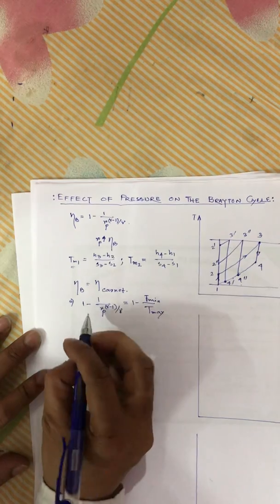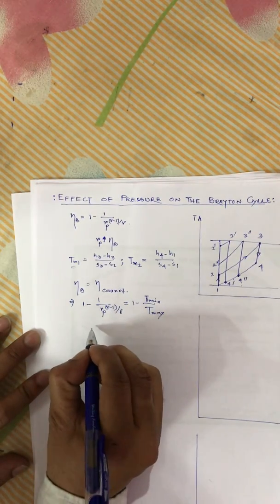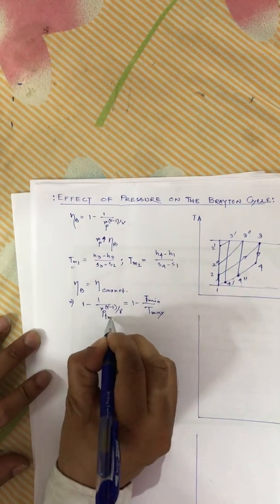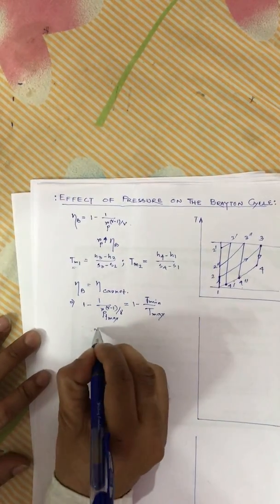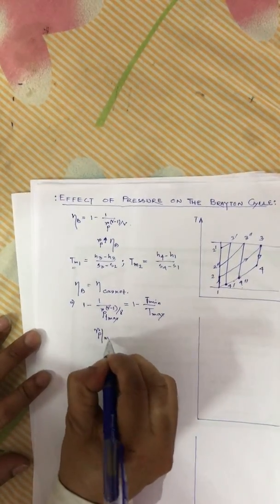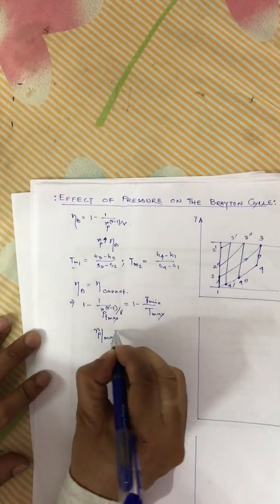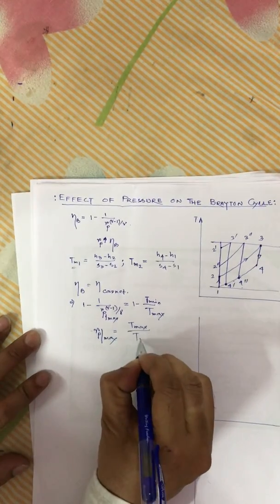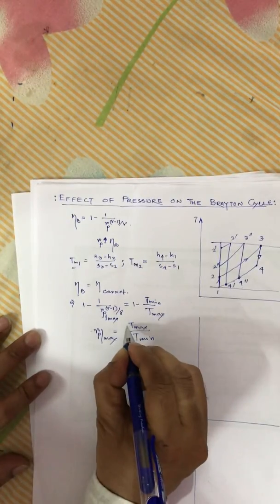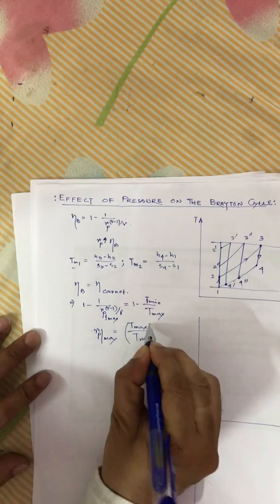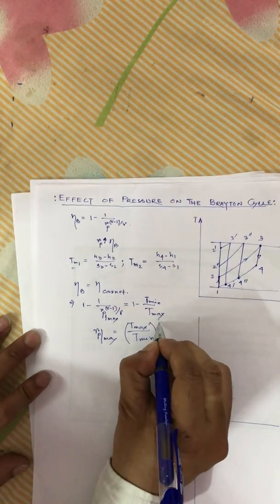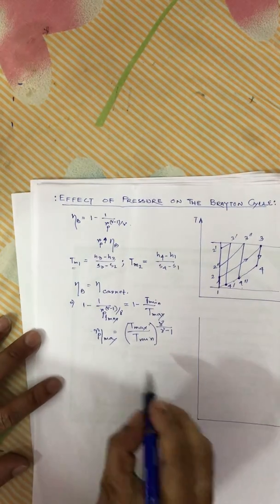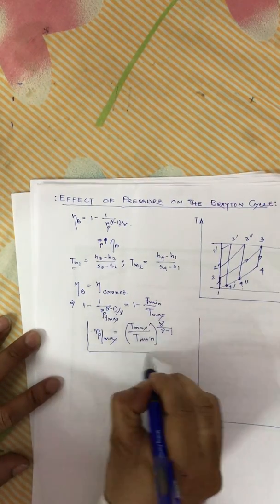From this relation, we can get the value of Rp_max. Rp_max is equal to (T_max divided by T_min) to the power gamma by (gamma minus 1), which is a very important relation.